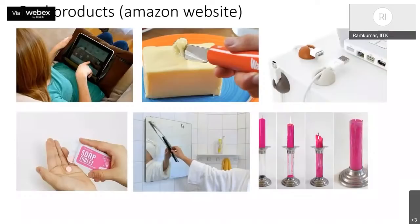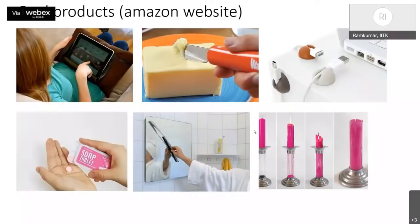Why not put a car wiper on a bathroom mirror? After a hot shower the mirror gets fogged, and cleaning leaves finger marks. A small powered wiper solves this. Here is an innovative candle stand with a wick running through both ends. When the wax melts from the top and deposits at the bottom, you flip the candle and use it again — almost like an endless candle. The innovation is in the holder concept, not the candle itself. All these are products you can innovate upon and develop.